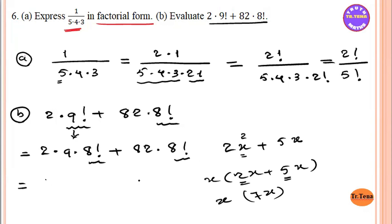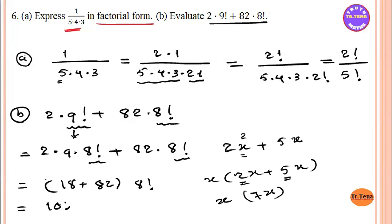And so 8 factorial. So 4 factorial is the first one. This is the first one. Plus 82. So it is the second one. The second one is 100 into a factorial. Let's see here: 4, 0, 3, 2, 0. 4, 0, 3, 2, 0.